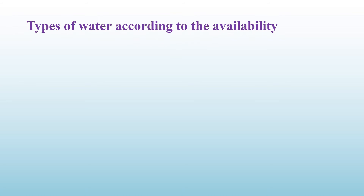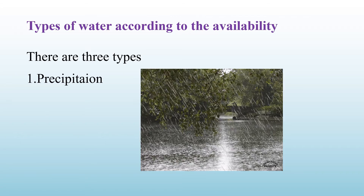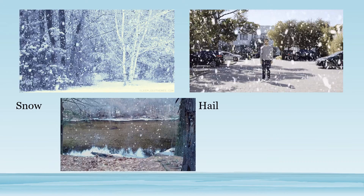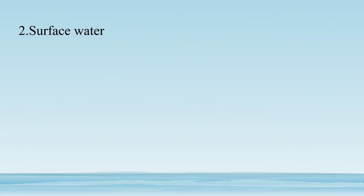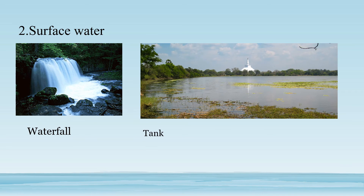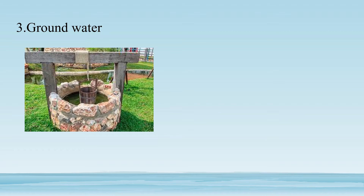There are three types of water according to availability. The first type is precipitation — rain, snow, hail, and sleet are types of precipitation. The second type is surface water — examples are waterfalls, tanks, seas, oceans, and rivers. The third type is groundwater, which can be seen in wells and springs.